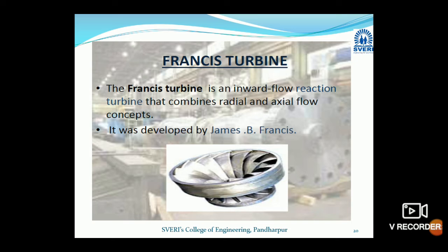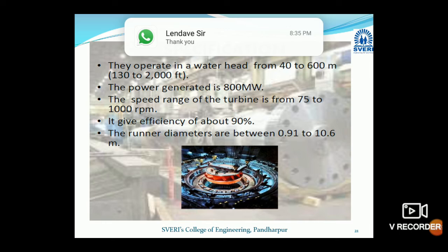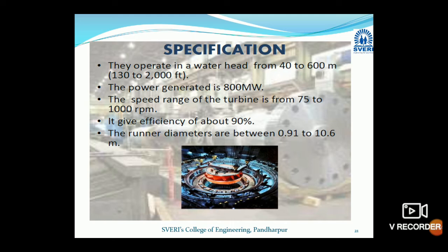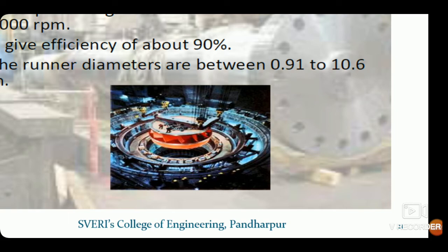The last type of turbine is the Francis turbine. The Francis turbine is an inward flow reaction turbine with a combined flow direction — water enters the runner radially as well as axially, making it a mixed flow turbine. It is a medium head turbine. Specifications: operational head from 40 to 600 meters; power generated up to 800 megawatts; speed range 75 to 1000 rpm; efficiency about 90%; runner diameter from 0.91 to 10.6 meters.